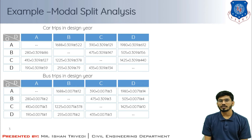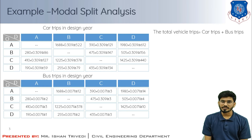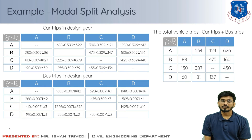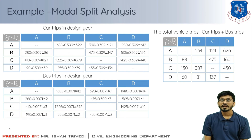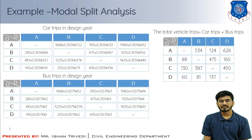Now I will make the summation of all these to get the final matrix denoting car trips plus bus trips. For each cell: A-origin to B-destination, car trips are 522 and bus trips are 12, so 522 + 12 = 534. Similarly you can do this for the entire matrix. It is one of the simplest things — put the suitable cell value, make the summation, and place it at the correct cell.